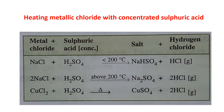Heating metallic chloride with concentrated sulfuric acid also produces HCl gas. NaCl plus H2SO4 below 200 degrees centigrade — this is a very important reaction — forms HCl gas along with NaHSO4 (sodium bisulfate). If the same reaction is carried out above 200 degrees centigrade, then with HCl we get Na2SO4. Copper chloride CuCl2 with H2SO4 when heated gives HCl and CuSO4.